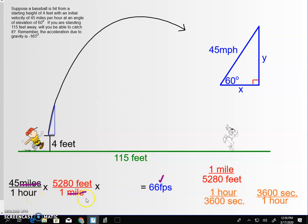See, hours are in the bottom. So, if I choose this where hours are on top, you'll notice the hours cancel and now we have feet per second. Perfect. So, now instead of 45 miles per hour, we can put feet per second. So, let's just put that right up there. Fantastic.